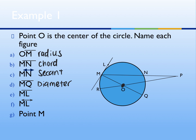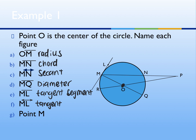What about ML? It's a tangent. Remember, tangents have to be lines. Is this a line? No, it's a segment. So we can't just label it tangent — we have to say it's a tangent segment. Tangents can be segments, rays, or lines. The only one called just a tangent with nothing afterwards is if it's a tangent line. Make sure you specify if it's a segment or a ray. What would we call point M? It is not the center and it's not the tangent — it's the point of tangency.